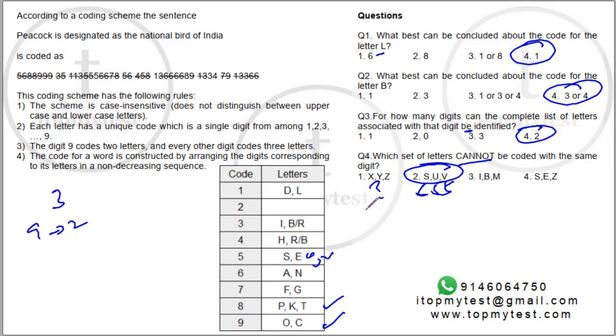So this is your correct answer. I, B, M is possible. M, we don't know. So M can come here. S, E, Z is possible. Z, we don't know. It can come here. Everything else is possible. SUV is not possible.